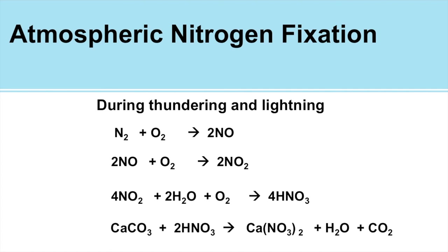When this nitric acid — falling as acid rain on the earth's surface — reacts with the alkali of the soil, that is the limestone (CaCO₃), it turns into the form of soluble nitrate. So in the first reaction, nitrogen and oxygen combine forming nitric oxide; the nitric oxide is further oxidized forming nitrogen dioxide; nitrogen dioxide reacts with water from rain forming nitric acid; and finally nitric acid reacts with limestone forming soluble nitrate. This is called atmospheric nitrogen fixation.